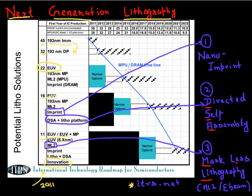The first technique is imprint, or nano imprint lithography. The second technique is called DSA, which stands for Directed Self Assembly — I'll explain what that means. The third and final technique is noted as ML2, or maskless lithography, also known as E-beam lithography. Let's start with nano imprint first.